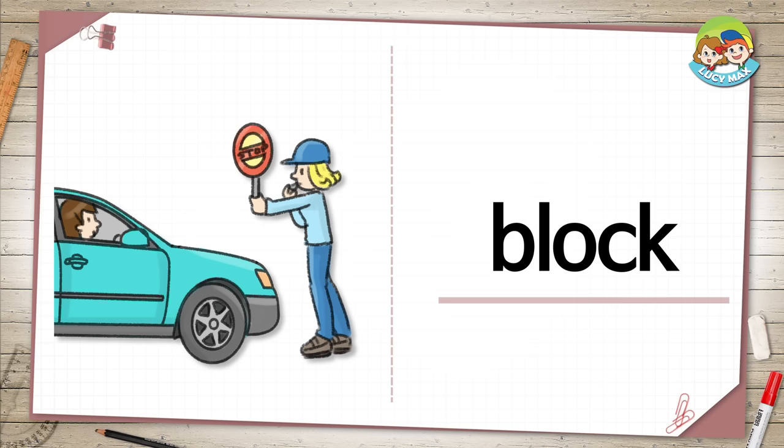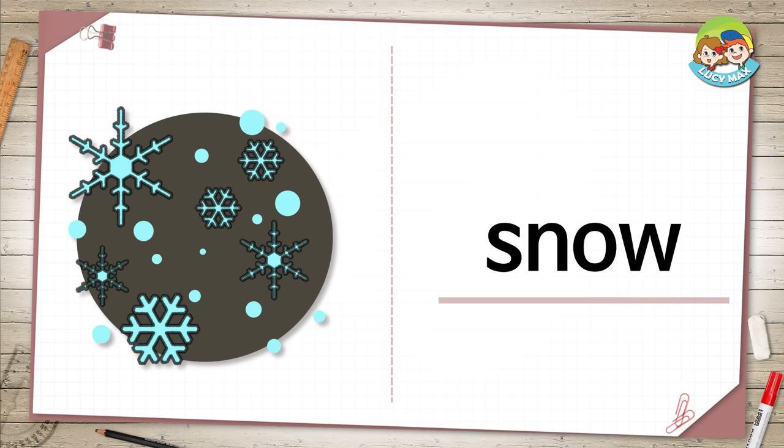Snow. When the rain falls and gets cold, it turns to snow. You can make things with snow. What can you make with snow?